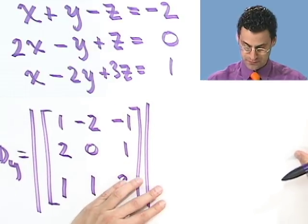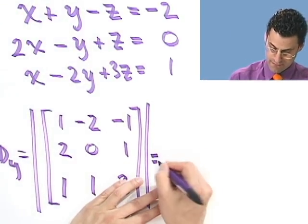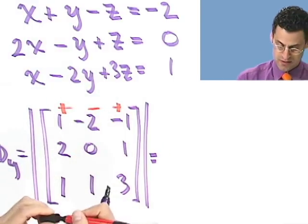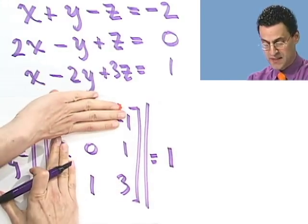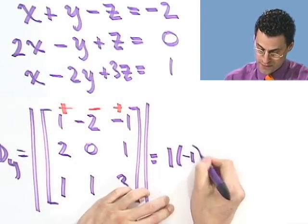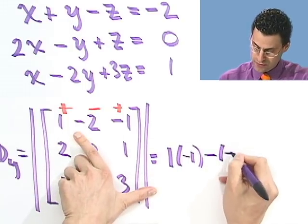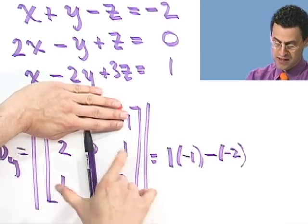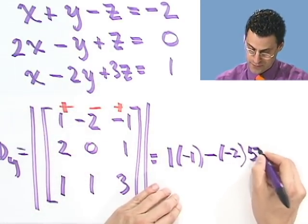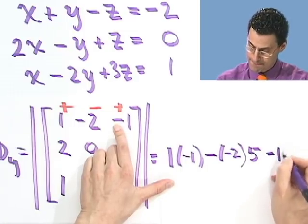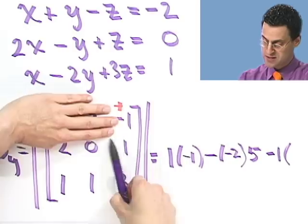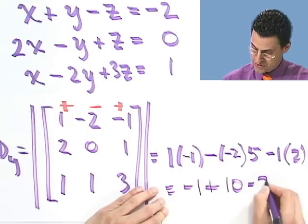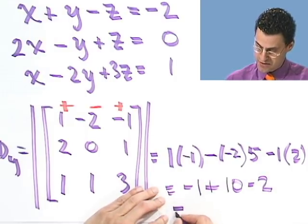So what would that give me? Well, let's see. Again, I'll expand around here. Remember the signs. Plus, minus, plus. So I have a 1. And then I've got to take that determinant. That's a 0 minus 1. So that's negative 1. Then I've got a minus negative 2 times what? Well, times that determinant, which is notice 6 minus 1, which is 5. And then I have a plus negative 1 times that determinant, which is 2 minus 0, or 2. So what I see is negative 1 plus 10 minus 2. So that's going to be 10 minus 3, which equals 7.